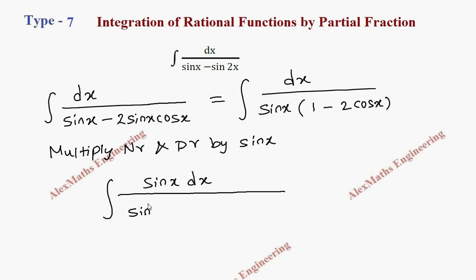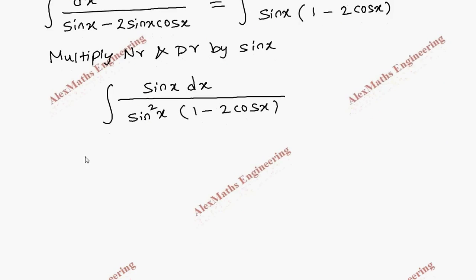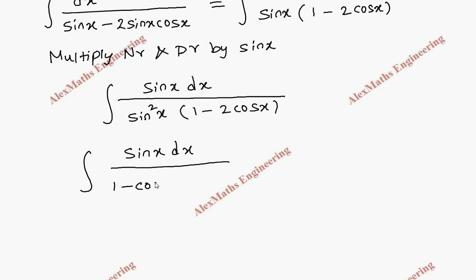The denominator already has one sin x, and when we multiply by one more sin x we get sin squared x into (1 minus 2 cos x). Now sin squared x is replaced with (1 minus cos squared x) using the trigonometric identity sin squared x plus cos squared x equals 1. The remaining terms stay as they are.